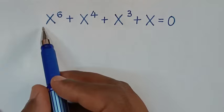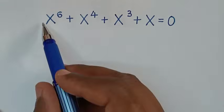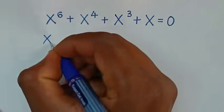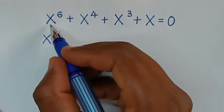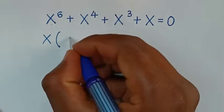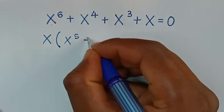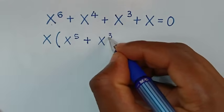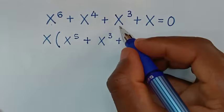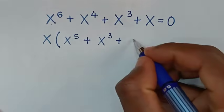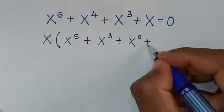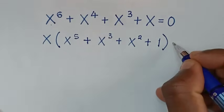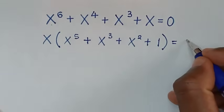First, from the left side x is common, so we'll start by taking x out of the bracket. Then x power 6 divided by x is x power 5, plus x power 4 divided by x is x power 3, plus x power 3 divided by x is x power 2, plus x divided by x is 1. The bracket is equal to 0.